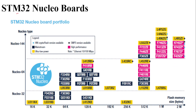STM32 Nucleo boards can be categorized on the basis of their flash memory size and on the basis of the number of pins the microcontroller contains. The flash memory is the memory where we will upload our code. Depending on your requirement you can choose a memory size ranging from 16 kilobytes to somewhere around 2 megabytes. Based on the number of pins, Nucleo boards provide 32-pin, 64-pin, and 144-pin microcontrollers.